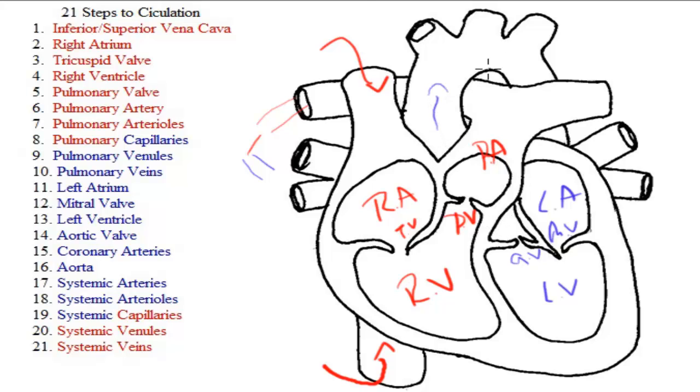Blood is going to keep flowing through the aorta and enter the systemic circulation.